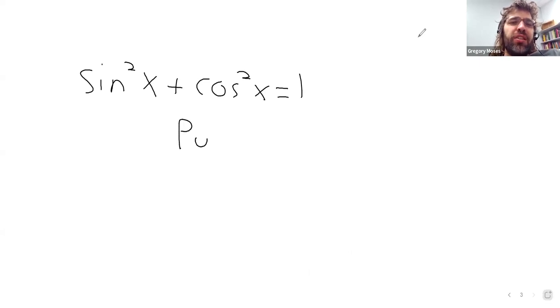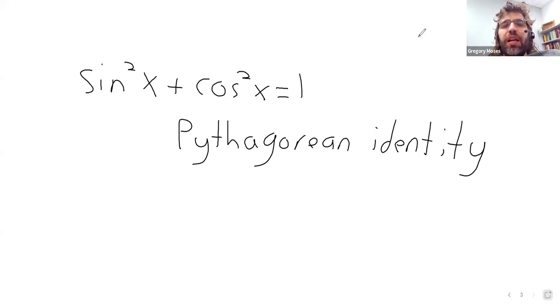And some of them we've already seen before. For example, sine squared x plus cosine squared x equals 1. That's the Pythagorean identity. We have talked about this. It has the word identity right there in its name.